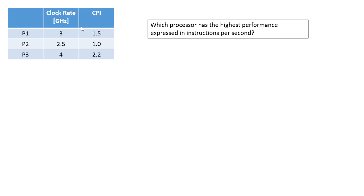We're given some information about three processors: P1, P2, and P3. What we're given is the clock rate in gigahertz and the cycles per instruction, CPI. Part A asks which processor has the highest performance expressed in instructions per second.